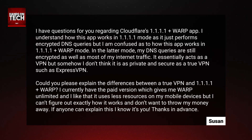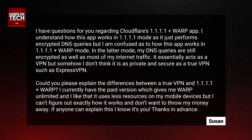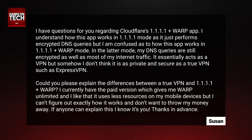I understand how this app works in 1.1.1.1 mode, as it just performs encrypted DNS queries, but I am confused as to how this app works in 1.1.1.1 and Warp mode. In the latter mode, my DNS queries are still encrypted as well as most of my internet traffic. It essentially acts as a VPN, but somehow I don't think it is as private and secure as a true VPN, such as ExpressVPN. Could you please explain the difference between these two things?